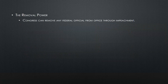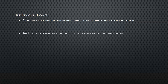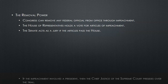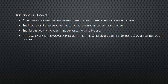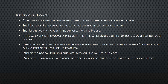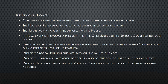Removal power. Congress can remove any federal official from office through impeachment. The House of Representatives holds a vote for articles of impeachment; the Senate then acts as a jury if the articles pass the House. If an impeachment involves a president, the chief justice of the Supreme Court presides over the trial. Only three presidents have been impeached: Andrew Johnson, who survived by just one vote; President Clinton, impeached for perjury and obstruction of justice and acquitted; and President Trump, impeached for abuse of power and obstruction of Congress and acquitted.